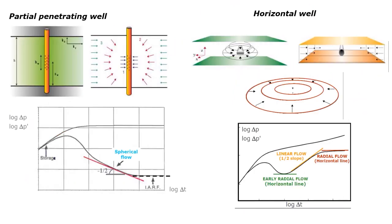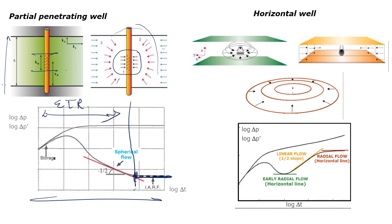For a partially penetrating well, the perforations are limited over the reservoir height. Flow converges near the wellbore, causing spherical flow in the near-wellbore region. On the derivative plot during early time, a slope of −1/2 indicates spherical flow due to this convergence.